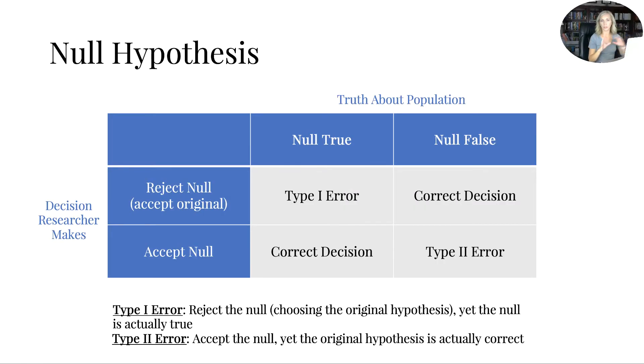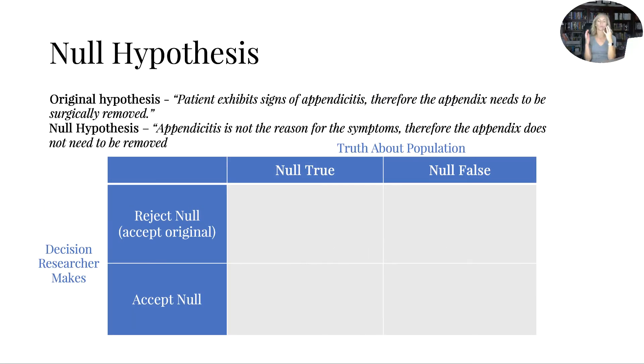Okay, this chart is kind of a lot, so I encourage you to pause it and just kind of digest it. But let's kind of look at this chart here. Over on what is like the y-axis, you could say over here, it's the decision the researcher makes. They either reject the null, meaning they accept the original, or they accept the null. And then up top is the truth about what's going on, the truth about the population, that the null is either true or false. And then within there, you have either a correct decision or a type 1 or type 2 error. So with a type 1 error where they reject the null, choosing the original, but the null is actually true, oh, they made a big mistake. Then a type 2 error where they accept the null, but the null is false, another big mistake, right?